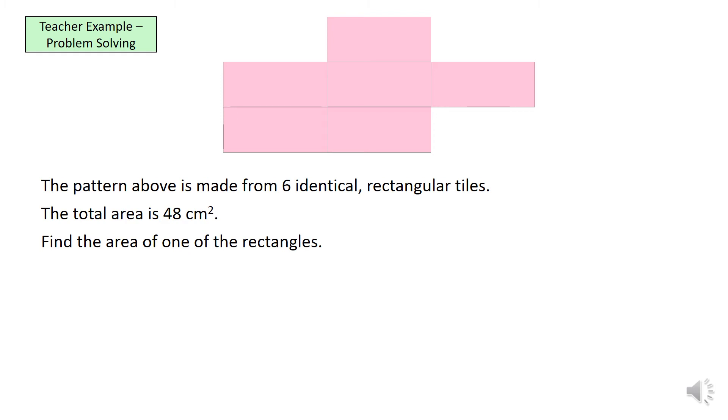If you read the question, the pattern above is made from 6 identical rectangular tiles and the total area is 48 cm2. We want the area of just one of those rectangular tiles. So, the first thing we do is if we know that the 6 of them equal 48, we can call rectangle R to start with. And as I said, 6 of them equal 48. So, we can say 6R representing rectangles equals 48. And again, it's a simple one-step equation. The more difficult part was actually creating the equation. So now we can just divide them both by 6 and it will tell us that R equals 8 cm. So, the area of one rectangle is 8 cm2.